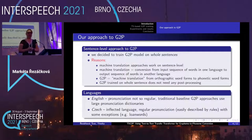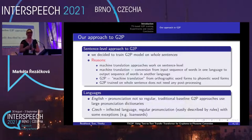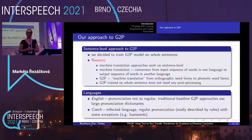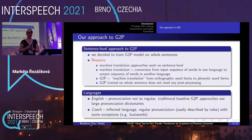In our paper, we focused on two languages: English and Czech. We intentionally chose these two because of their different natures. English pronunciation is not very regular, and traditional baseline G2P approaches use pronunciation dictionaries. Czech is a Slavic-inflected language with very regular pronunciation that could be described by a set of rules, though there are exceptions, especially for long words.